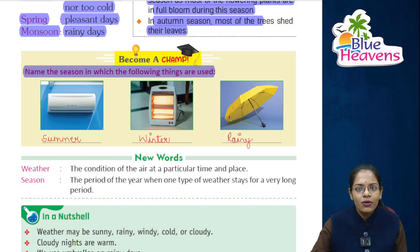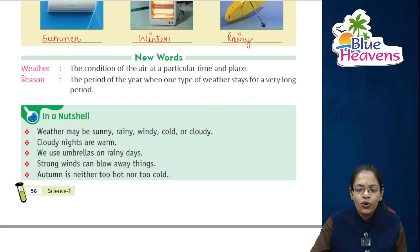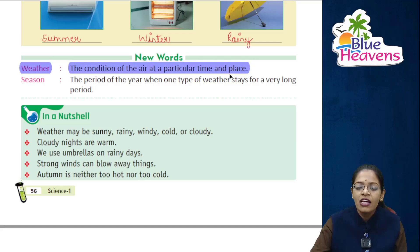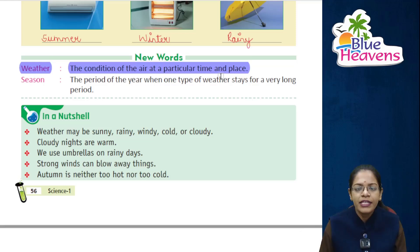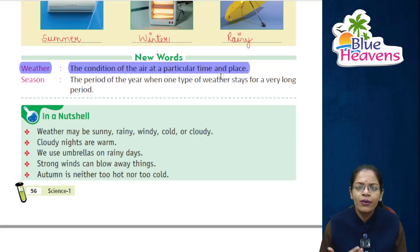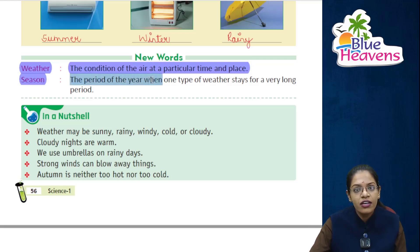Now let's look at new words. First word is weather — that means the condition of the atmosphere at a particular time and place. Season means the period of the year when one type of weather stays for a very long period.